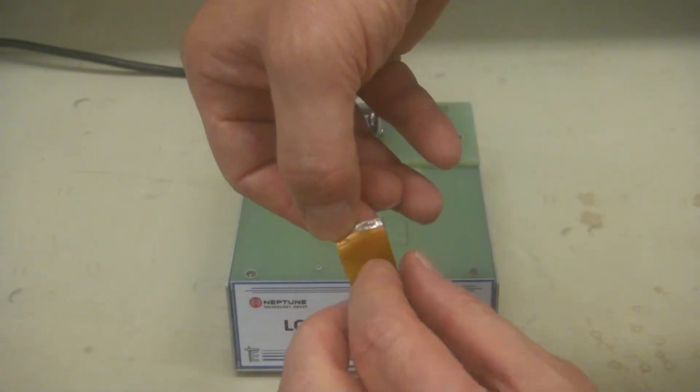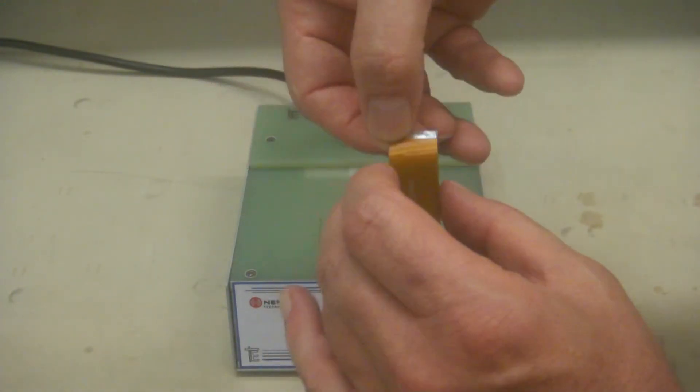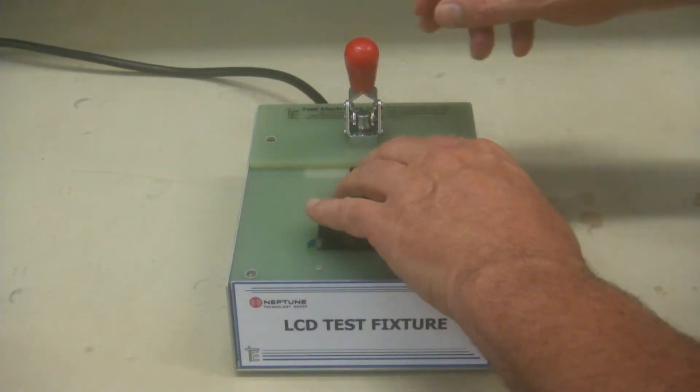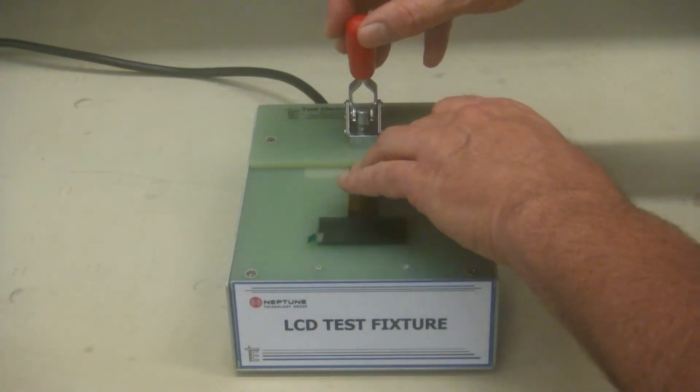They are exactly half a millimeter apart, which means it's 20 milli-inches center-to-center spacing, the accuracy required to probe this LCD display.